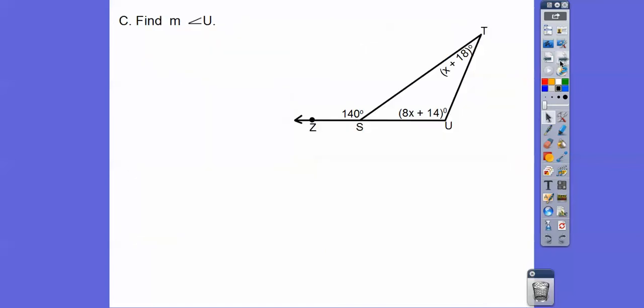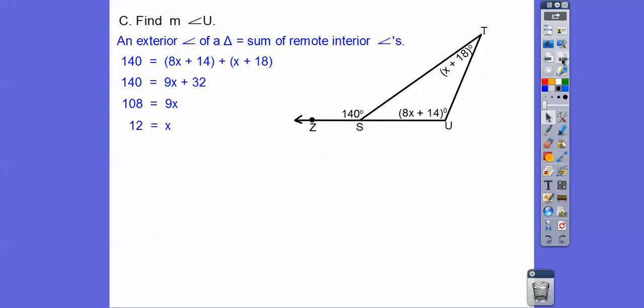All right, let's do a little review here. So we got this figure right here. We have an exterior angle of a triangle. The exterior angle equals the sum of these remote interior angles. 8X plus X is 9X, and then 14 plus 18 is 32. Subtract 32, divide by 9, and X is not the answer. It says find the measure of angle U. So right here, we're going to plug in 12. So 8 times 12 plus 14 is 96 plus 14. So 110, the measure of angle U is 110.